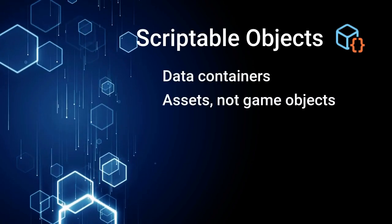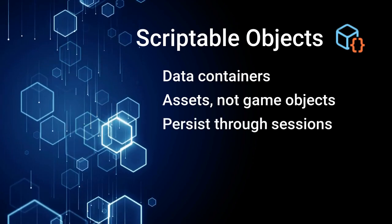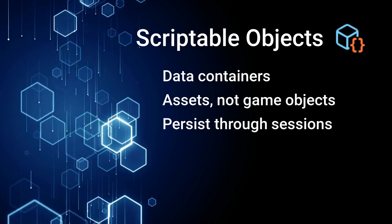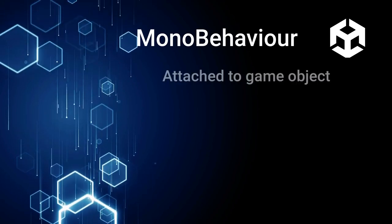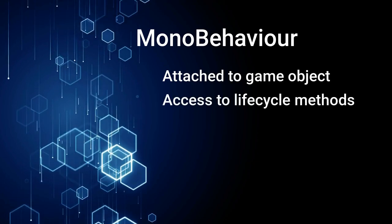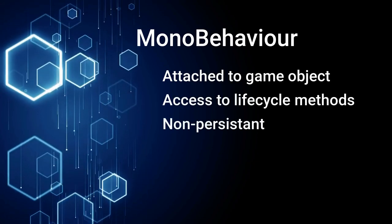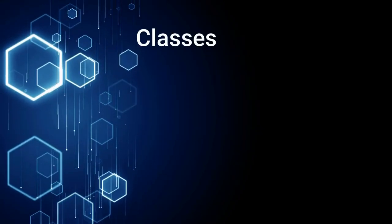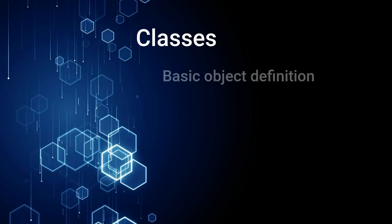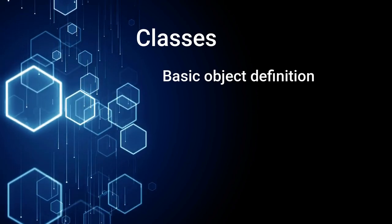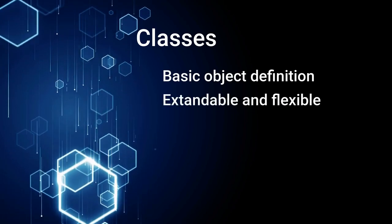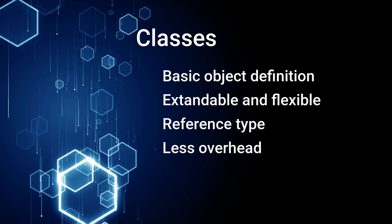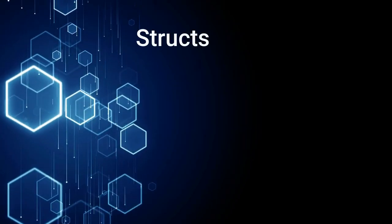Scriptable objects are fantastic reusable data containers within the Unity Editor — they're assets, don't need to be attached to game objects, and persist between game sessions, ideal for settings, configurations, and terrains. MonoBehaviours are special Unity classes that attach to game objects with built-in events like Start and Update — ideal for manipulating game objects or interfacing with the Unity lifecycle. Plain C# classes are versatile, helping us define objects and interactions, and sometimes a simple C# class will do the trick.